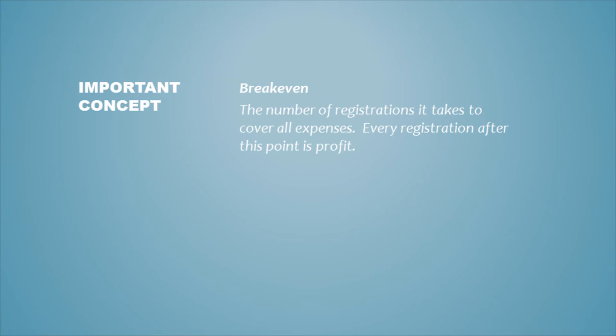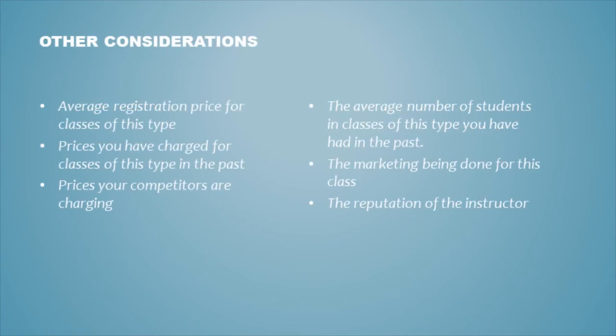The break-even number is the number of students or registrations it takes to cover all expenses. After we hit the break-even number, every registration after that point is profit. We also need to keep other things in mind when setting the price: What's the average registration price for this type of class? What have we charged in the past? What are competitors charging? What's the average number of students? How much marketing is being done? And what is the reputation of the instructor? All these things will impact the pricing of your class.